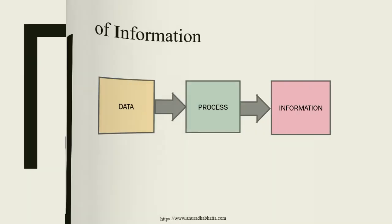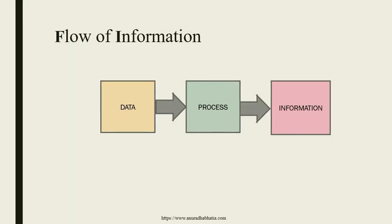To start with, what is the flow of information — how does the information flow? We get a lot of data from websites, from Google, from Kaggle and from UCI. We process that data and then the information is retrieved. We've seen in the previous video how data gives information and from that information, how knowledge is retrieved.